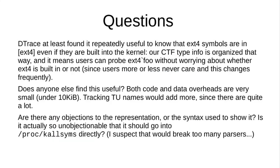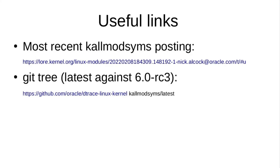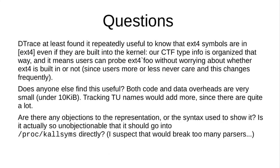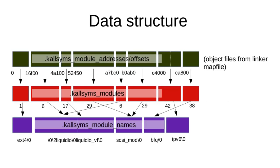We recently added a BPF iterator for kallsyms, and I'm quite happy to add a BPF iterator for kallmodsyms as well — I just haven't figured out how to do it yet. What I don't want is for the BPF iterator to be the only way to get access to this data, because shell scripts can't use them and getline is much easier to call than setting up BPF.